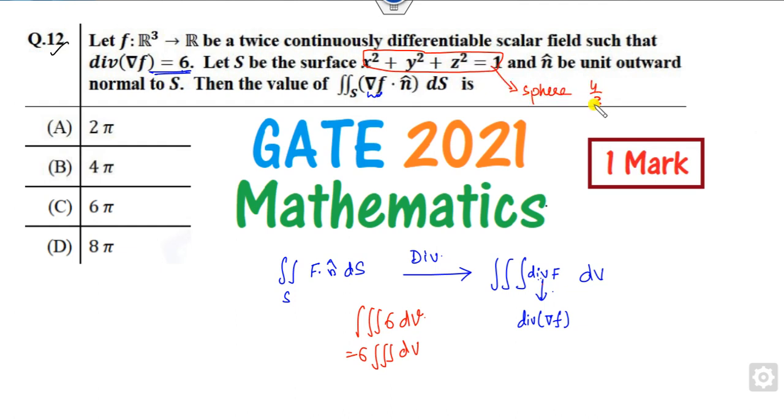What is the volume of this sphere? 4 by 3 pi r cubed, where radius is 1. So the answer is 4 by 3 pi multiplied by 6. That is the right answer.